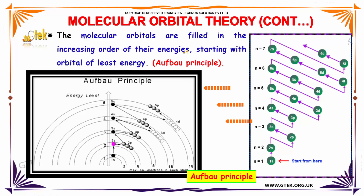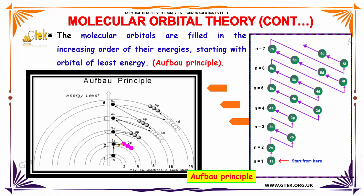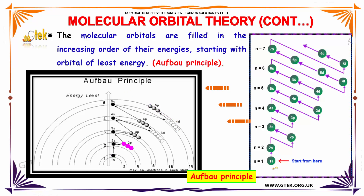The molecular orbitals are filled in the increasing order of energy, starting with the orbital of least energy. The order is: 2s, 2p, 3s, 3p, 4s, 4p, 3d, 4p, 5s, 4d, and 5p. This is referred to as the Aufbau principle.